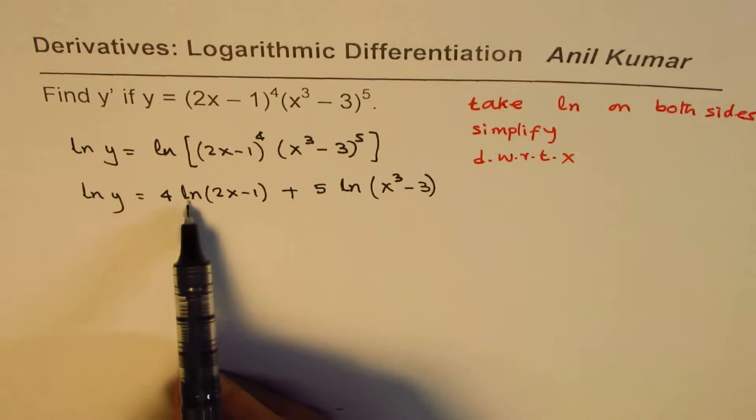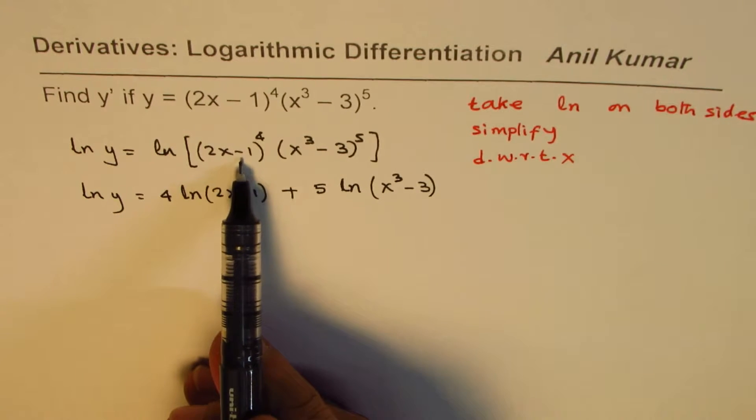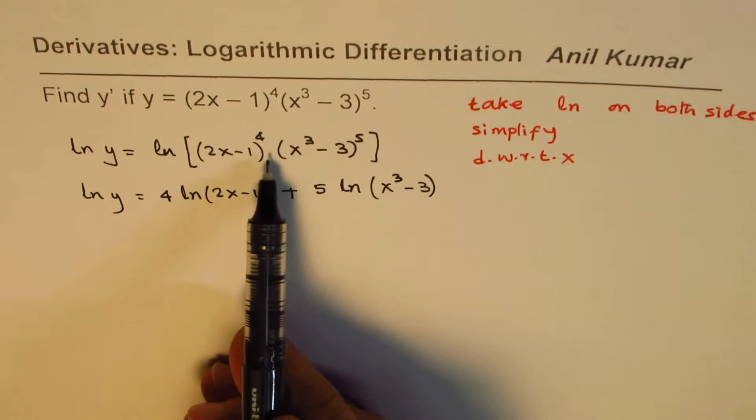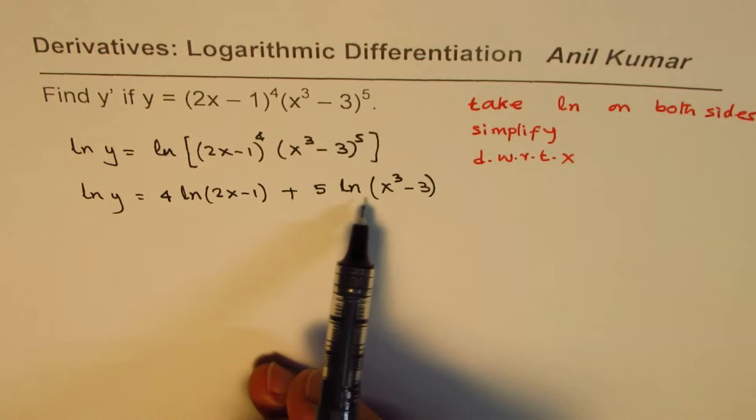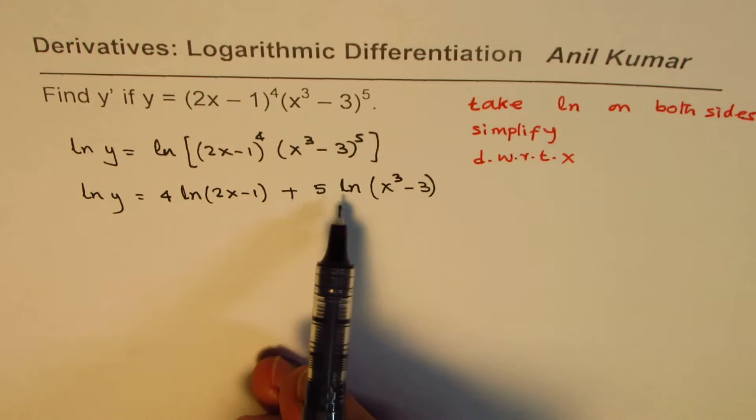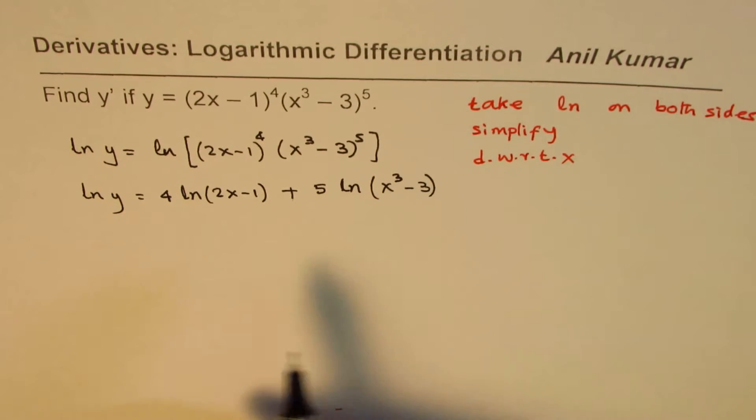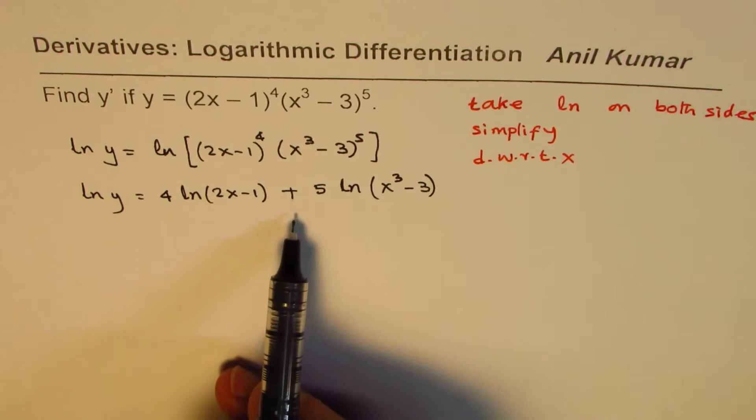So we get 4 times ln(2x - 1). Since this is a product, it could be written as sum of logarithms, right? 5 times ln(x^3 - 3). Now, at this stage,